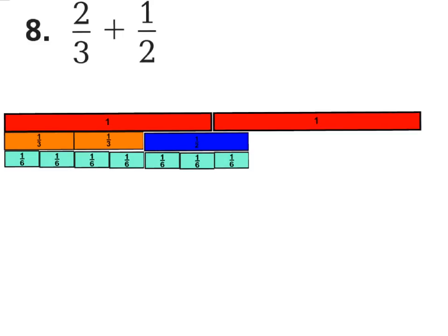Looking at question 8, I again laid down 2 wholes. As I was creating 2/3 with fraction pieces and added a 1/2 piece, I knew it extended beyond 1 whole. So I went ahead and laid down one more whole to show the answer will be between 1 and 2 wholes — greater than 1 whole but less than 2. As you can see, 2/3 plus 1/2 goes beyond 1 whole. I went ahead and put down 2/3 and a half laid side by side.